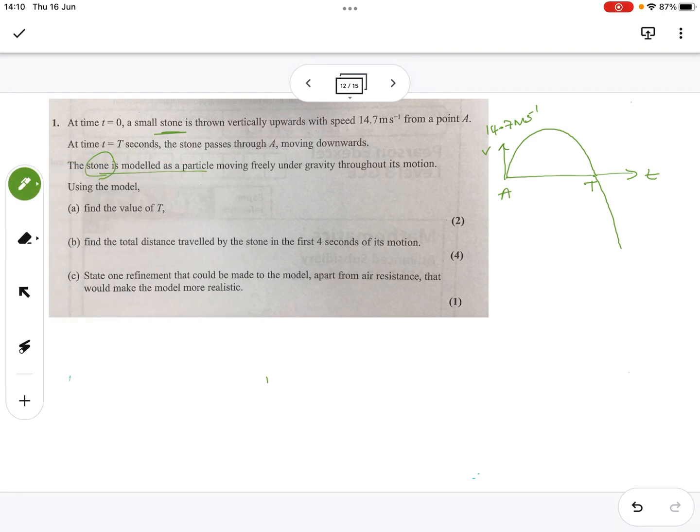Which means you can only use SUVAT. So, let's write SUVAT down and see what we've got and see if we can make any use of it. So, we want to find the time t when it comes back past A, which means overall displacement is zero. So, it's gone up and come back down. We've said up is positive at 14.7. So, gravity must be negative because it's coming down. So, up is positive. And so, gravity is pushing down. It's the equation without v. So, it's s equals ut plus half a t squared.